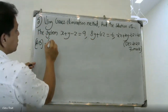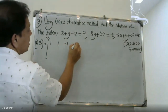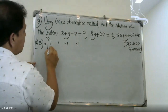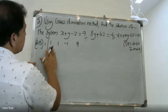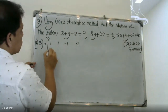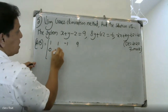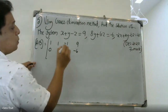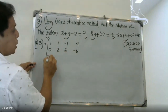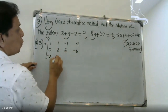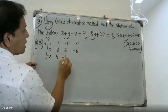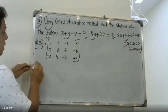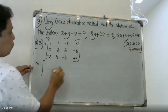First, we write the augmented matrix. The coefficients are: x equals 0, then minus 2, y equals 4, and the second equation equals minus 6. That is the augmented matrix — the augmented matrix is equal to the formula.